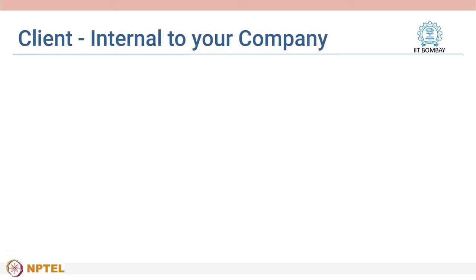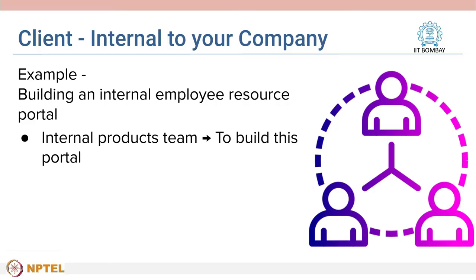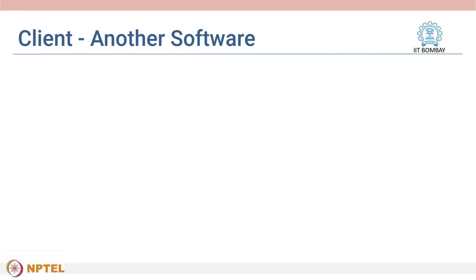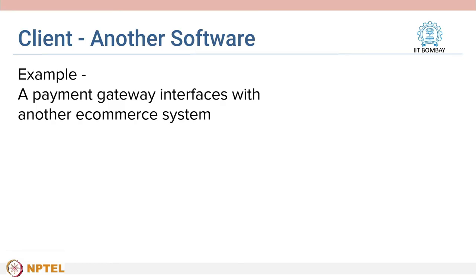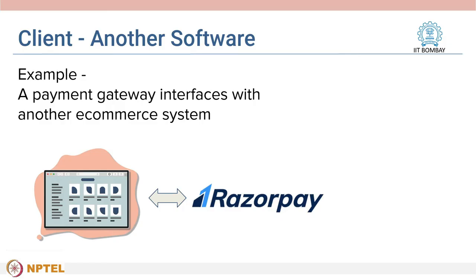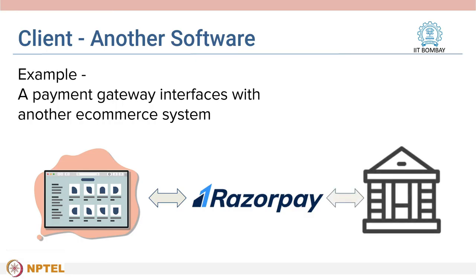For example, a company might want to build an employee resource portal which contains information about various employees and teams in the company. To build such a system, the company might form an internal products team which communicates with other departments like human resources to understand the requirements. The client can also be another software system — for example, a payment gateway like Razorpay interfaces with another e-commerce website or app to handle customer payments and refunds. Customer details are sent to the payment gateway by the e-commerce website, and the payment gateway communicates with the customer's bank and sends the response back.